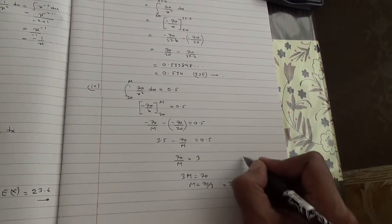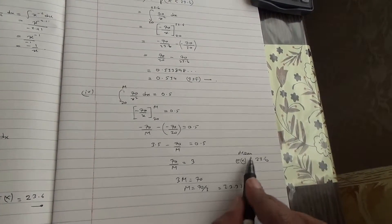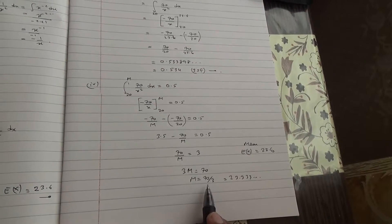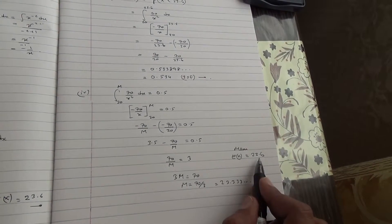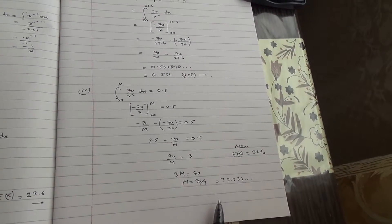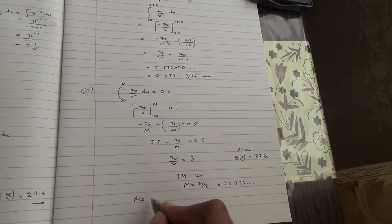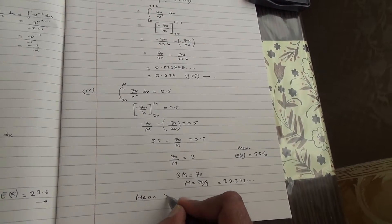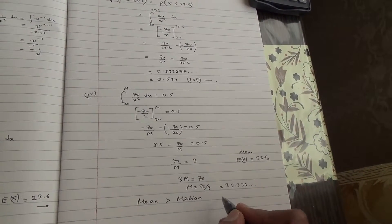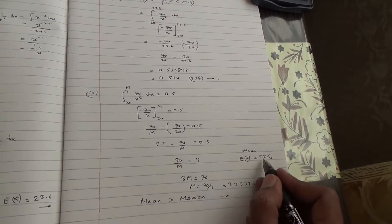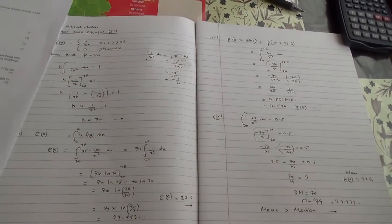We can now observe that E(x), the mean, was found to be 23.6, while the median is 23.333 recurring. Therefore, the mean is greater than the median.